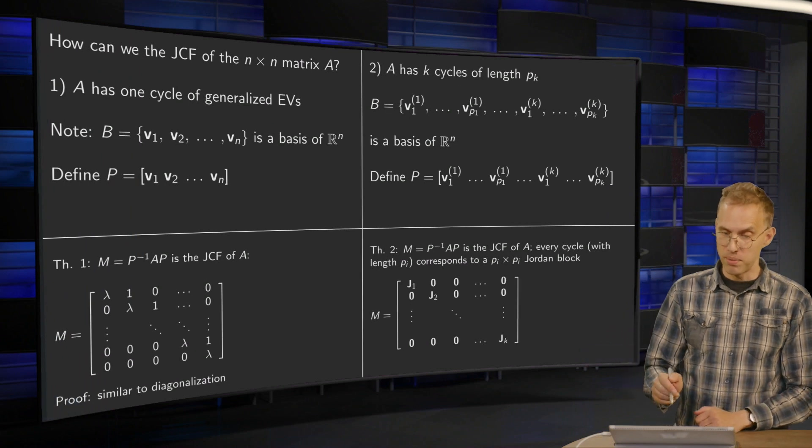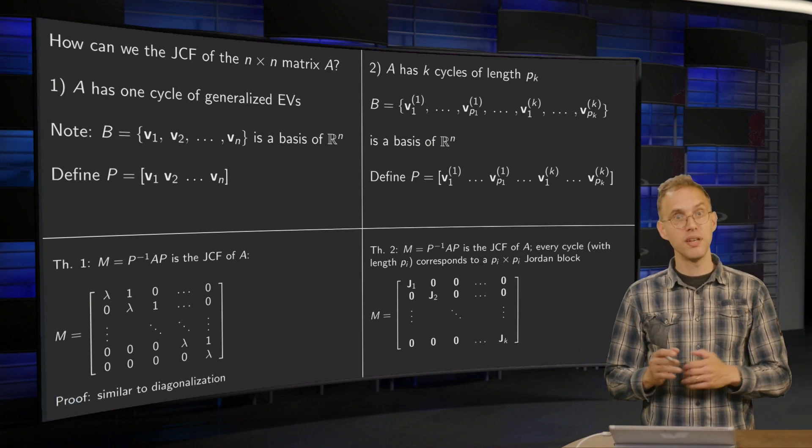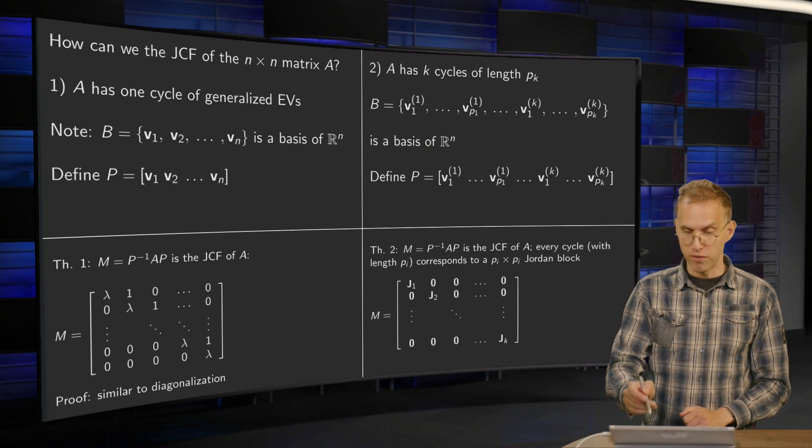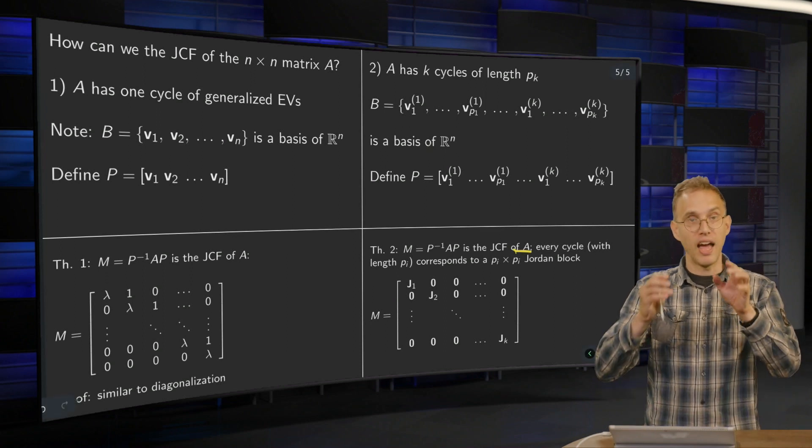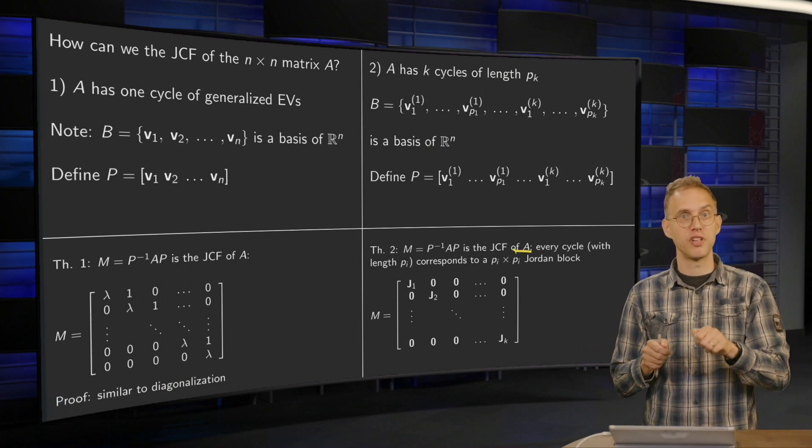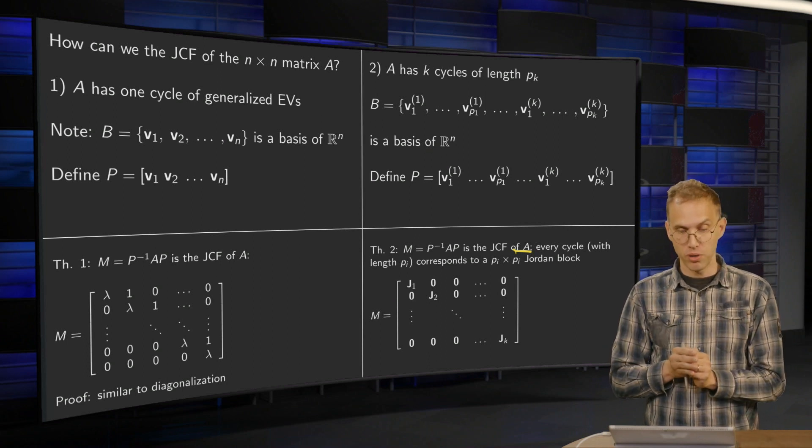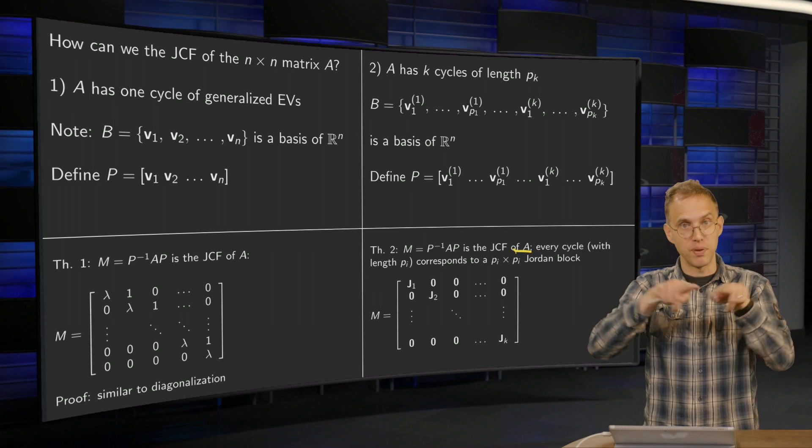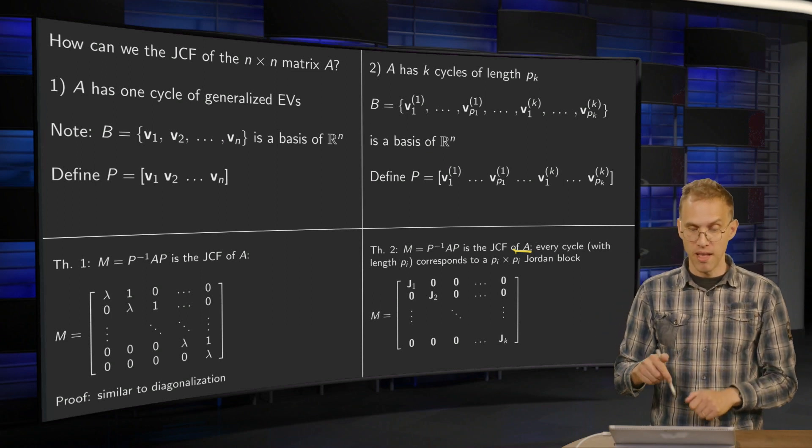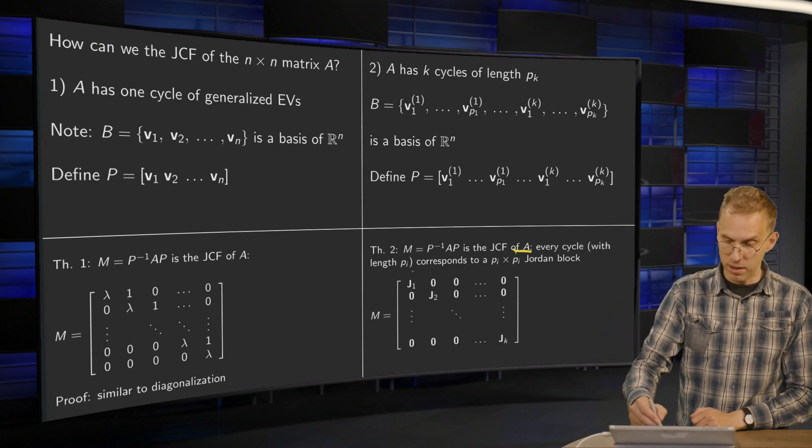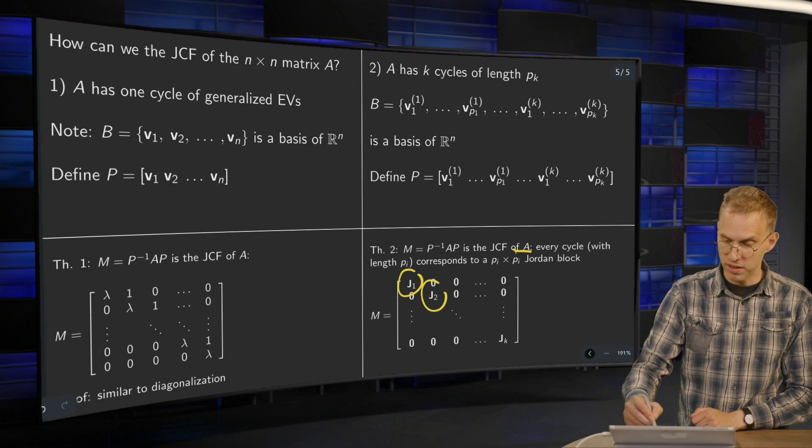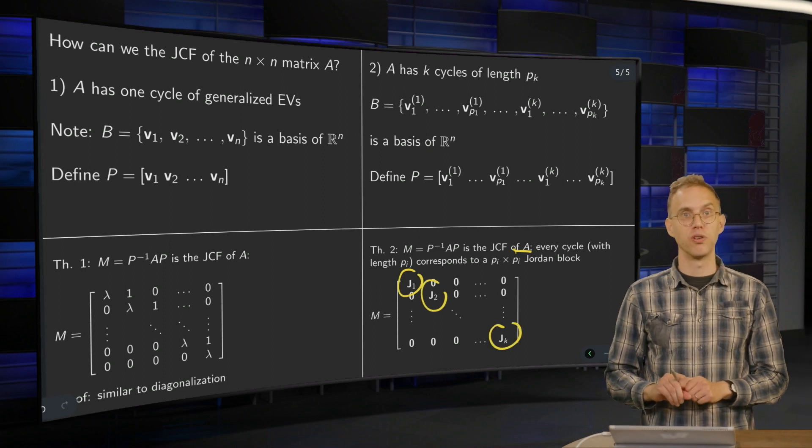Second theorem: now P inverse AP is the Jordan canonical form of A. Every cycle—so now you have multiple cycles—every cycle of length ρ_i corresponds to a Jordan block. You get then a matrix M consisting of K Jordan blocks instead of 1 Jordan block.